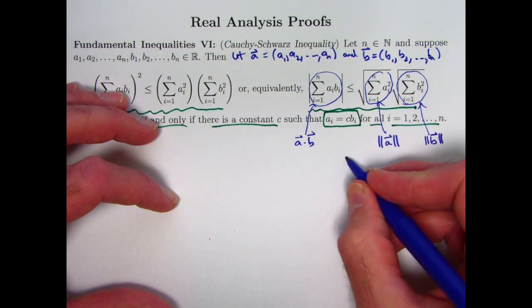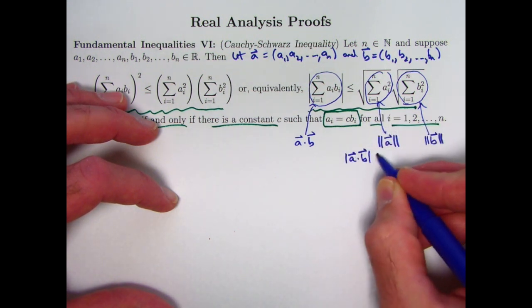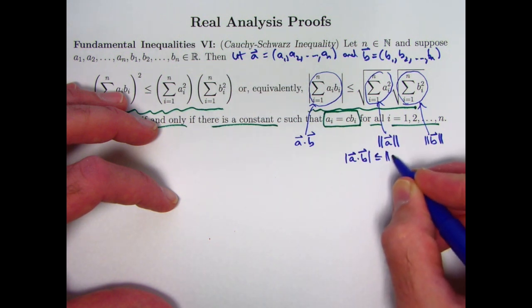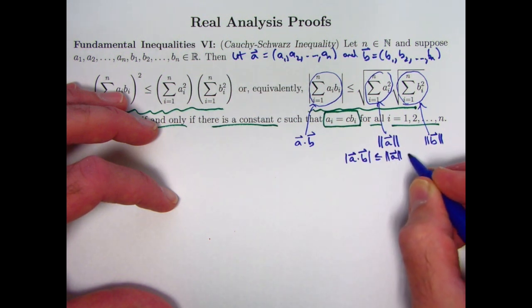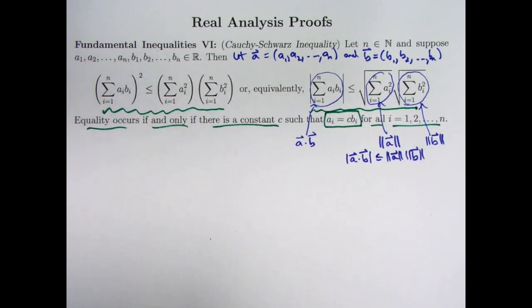And this thing is the length or magnitude or norm of b. And so this inequality with this notation would say the absolute value of the dot product of a and b is less than or equal to the length of a, or norm of a, times the norm of b. All those words are synonyms: length, magnitude, norm in this context.